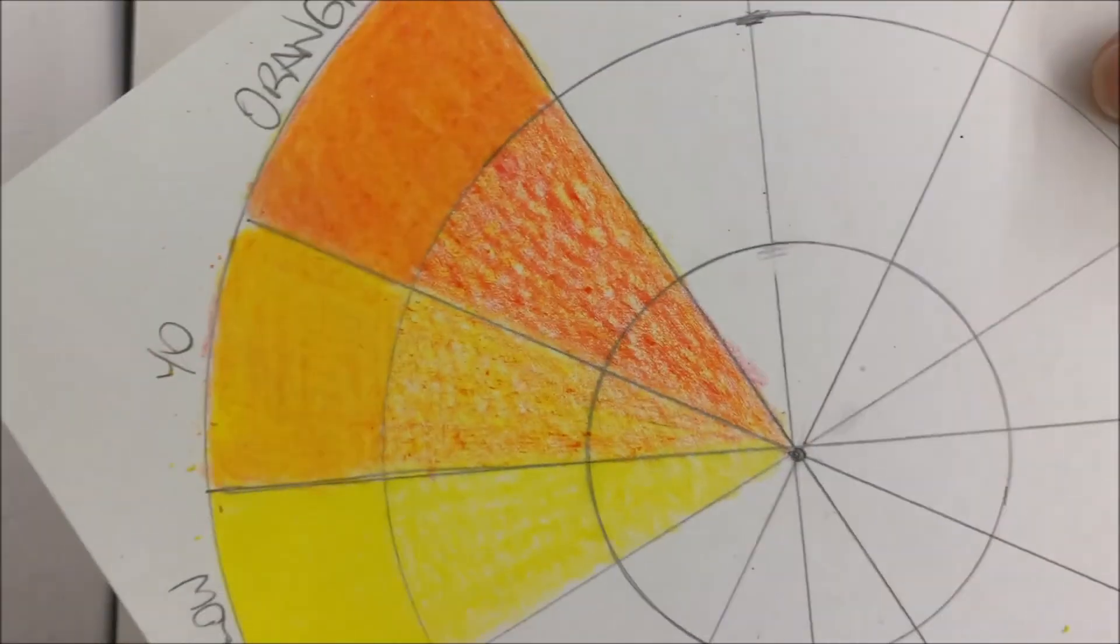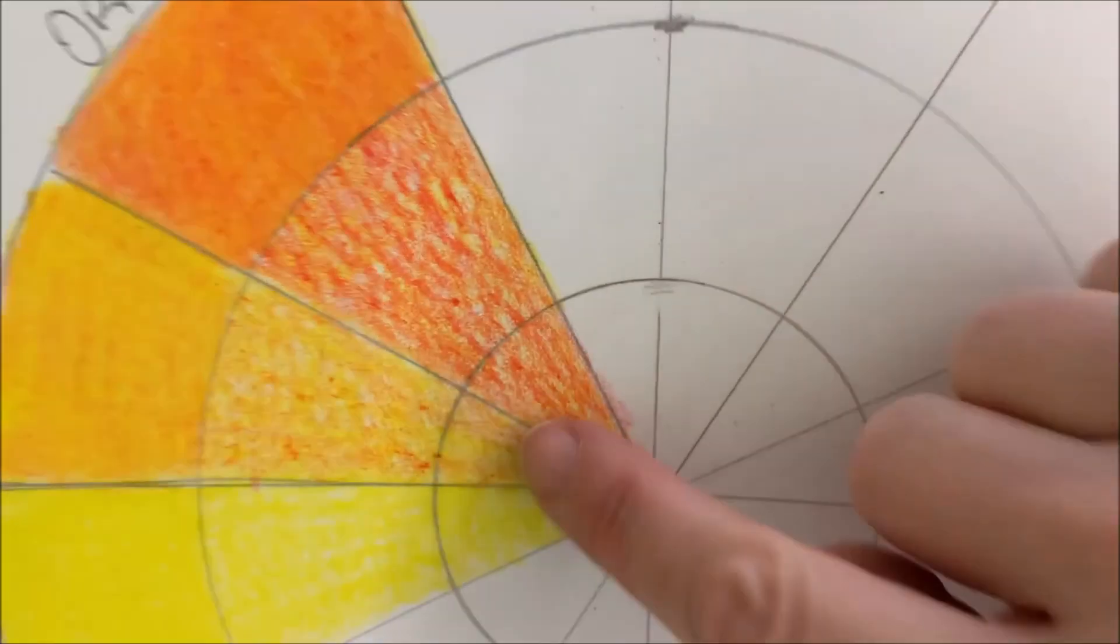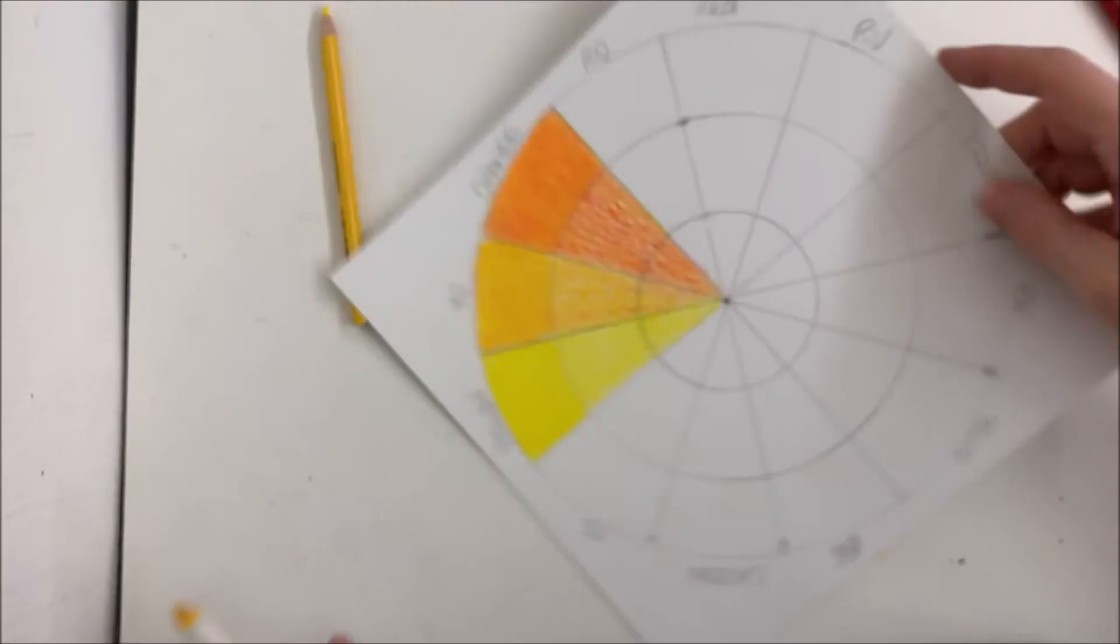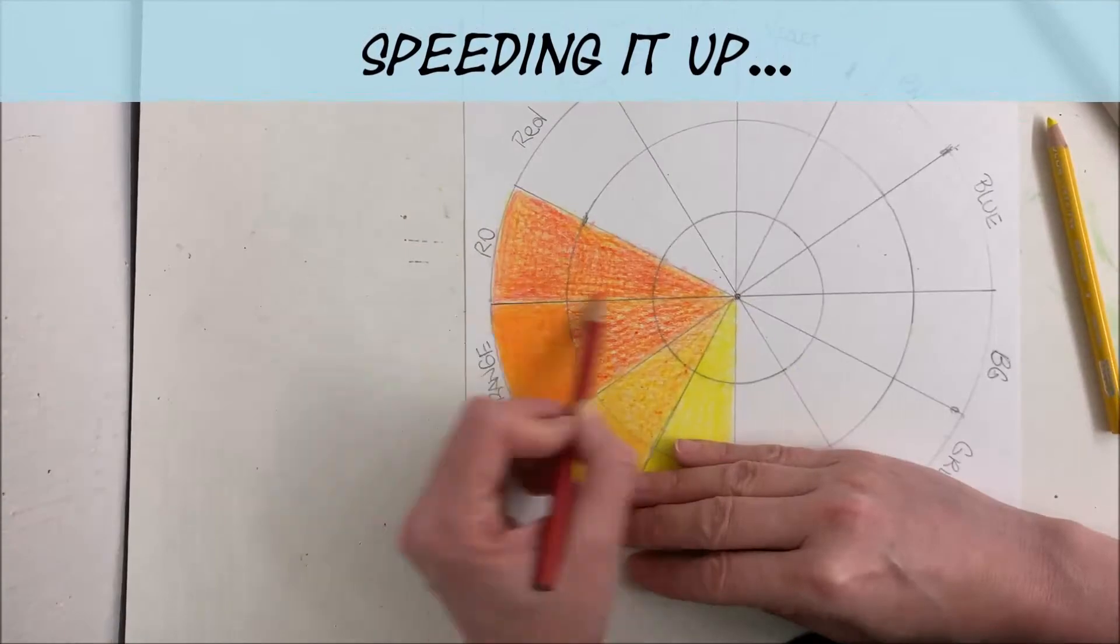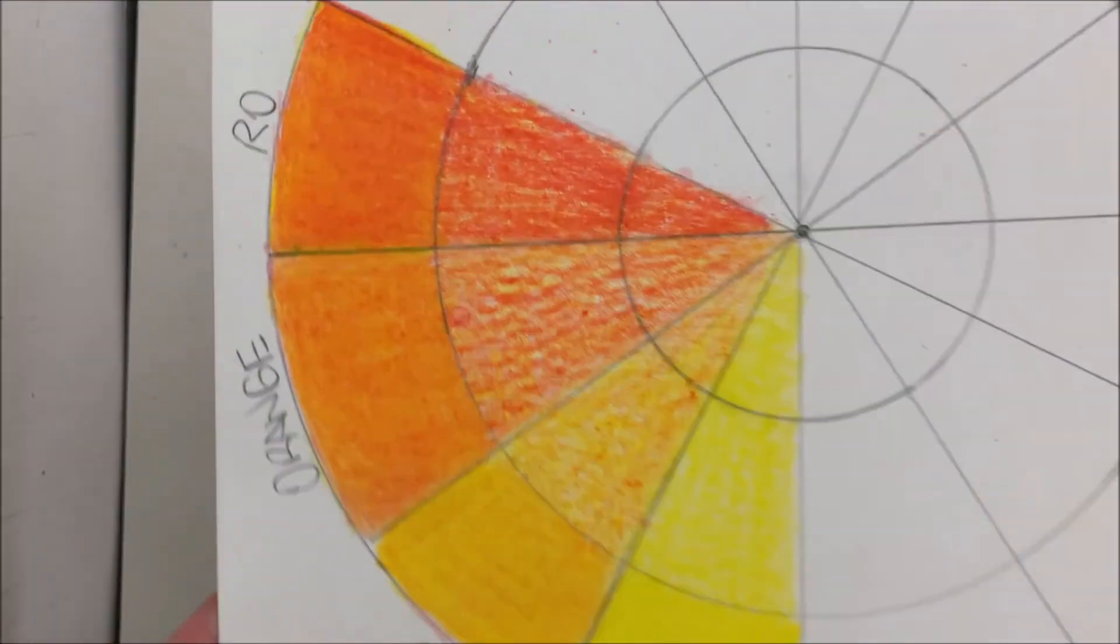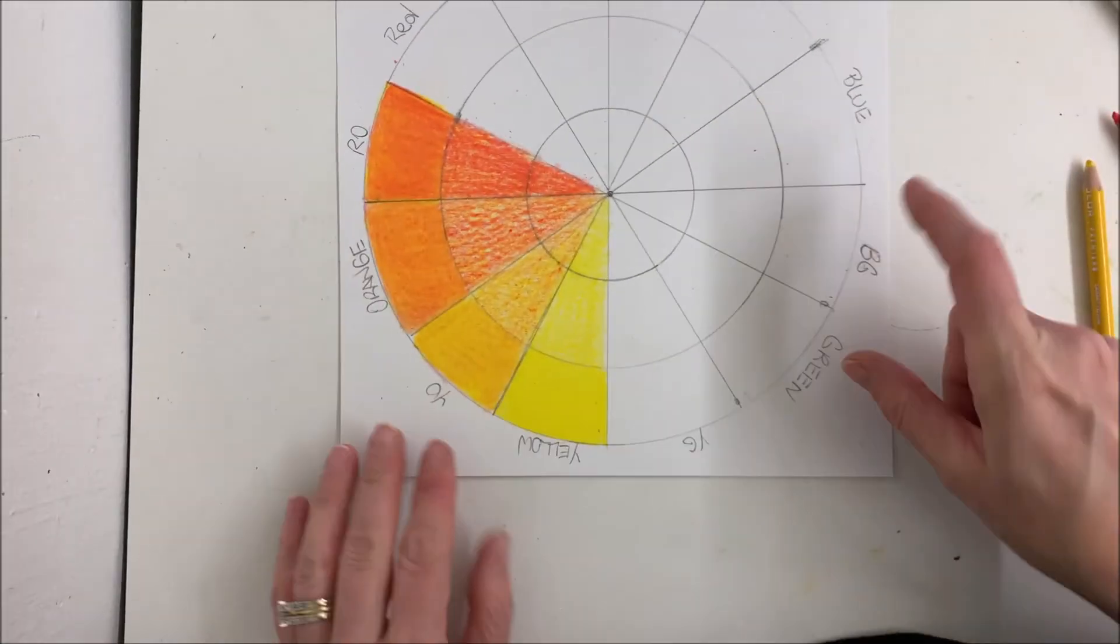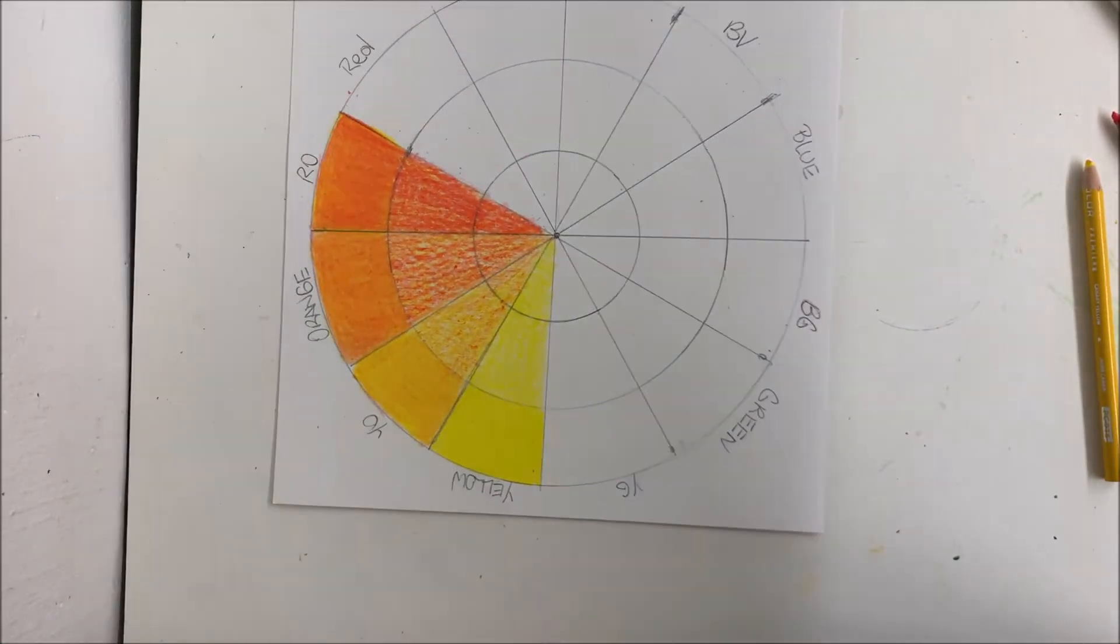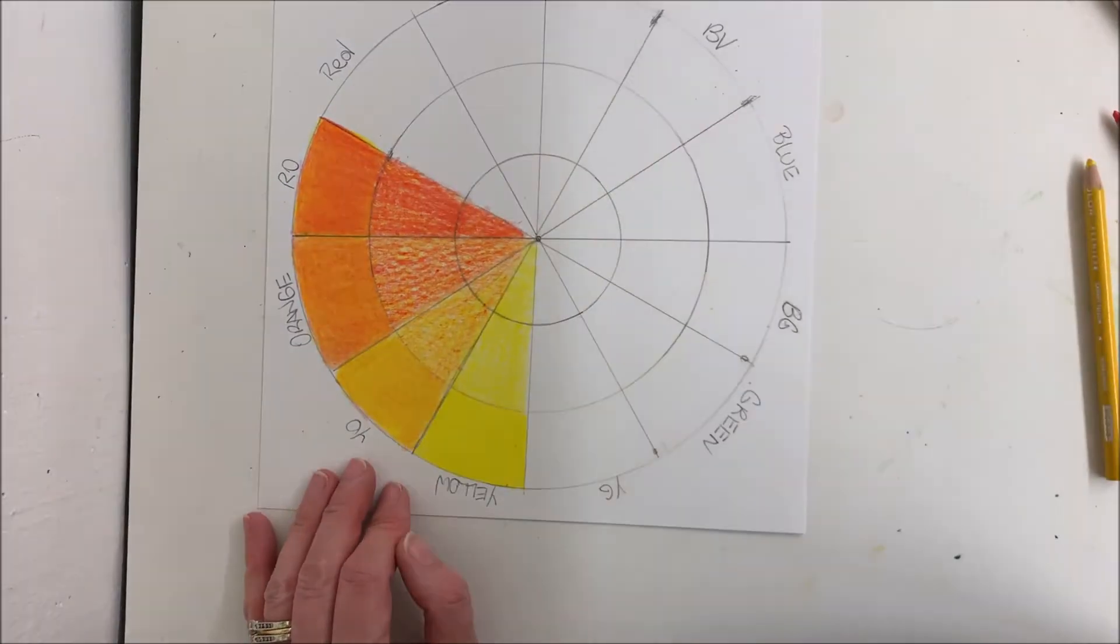So now I have a nice orange and yellow orange. Remember, I'm leaving these two wedges without being blended because we're not ready for those yet. Okay. There you have it. There's your red, orange, orange, yellow, orange, and yellow on your color wheel. You can go ahead and fill in the rest and I'll fast forward so that you can see what it looks like when it's done.